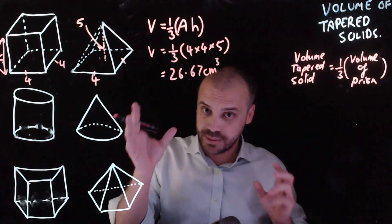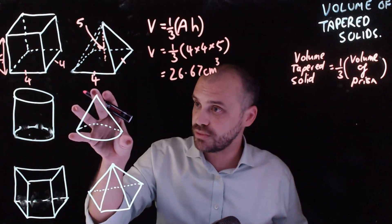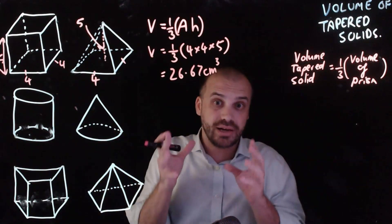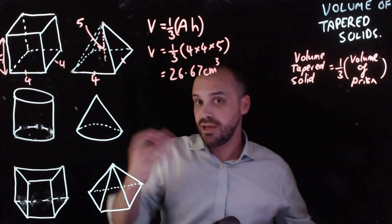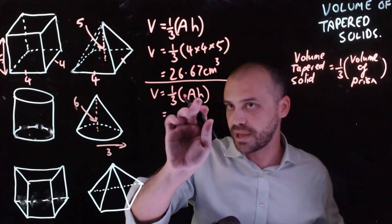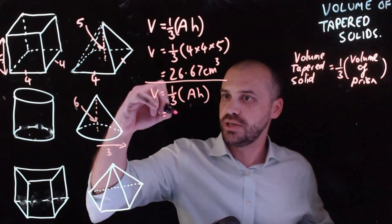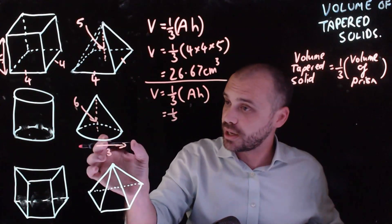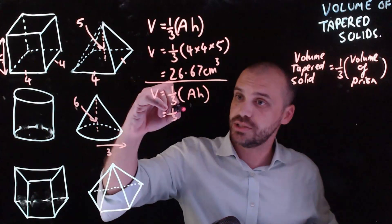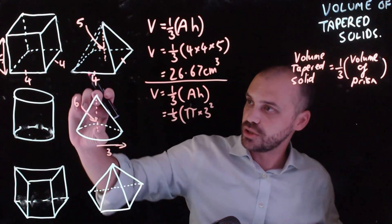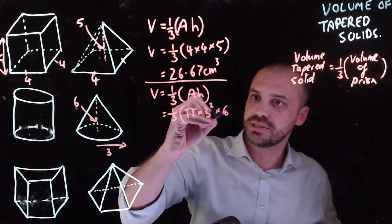This is the same deal. If I want to know the volume of this, I simply find the volume of the prism that would house it, that it could be contained within, and then I divide it by three. So the volume is one-third area of the base times the height. Now, the area of this base is going to be pi r squared, because it's a circle. So pi times three squared times the height, which is six.